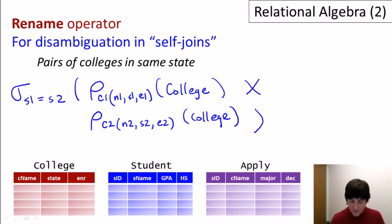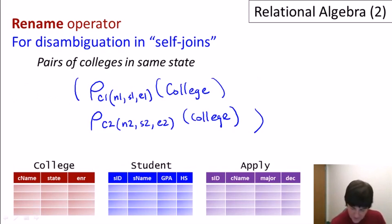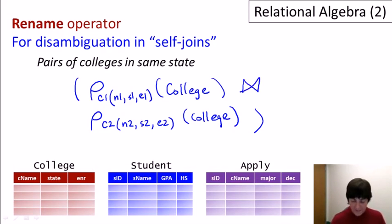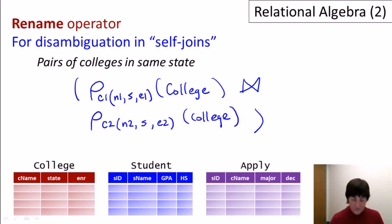An even simpler approach: instead of cross product plus selection, we can use natural join. We remove the selection operator and use a natural join between C1 and C2. For the natural join to work, we need matching attribute names, so we keep the same name S for the state attribute in both renamed instances. When we do the natural join it enforces equality on those two S attributes.